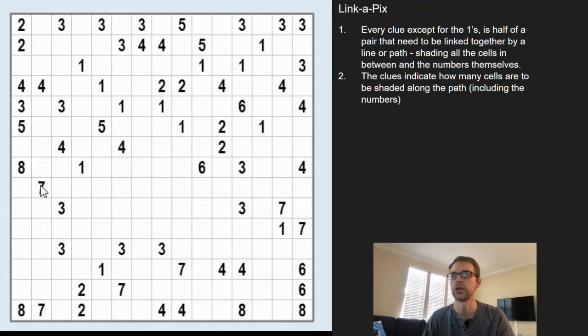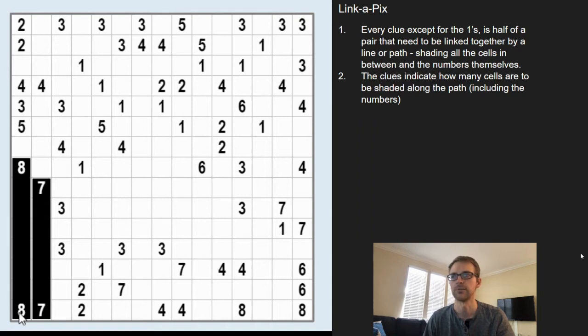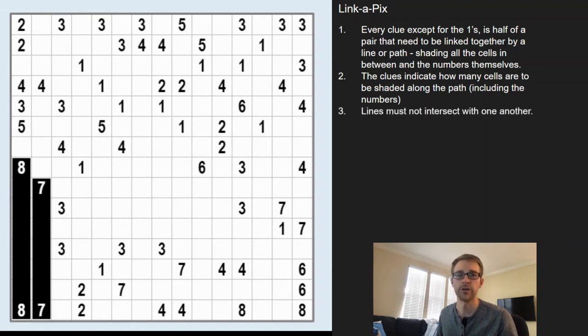If we look at this seven here, it's exactly seven cells to go down to the other seven, and so you can link those numbers up. Link the eight with the other eight and there's eight cells shaded. The lines must not intersect with one another and the lines move one cell at a time orthogonally, so you can't move diagonally.